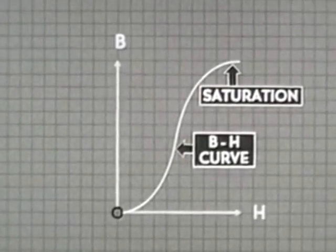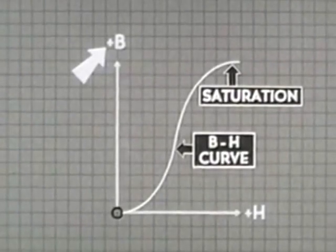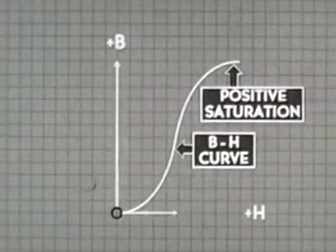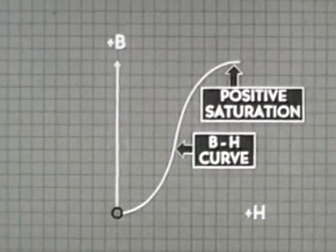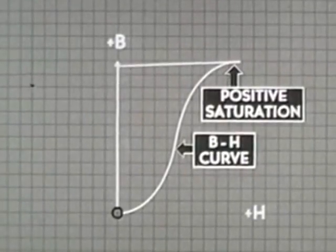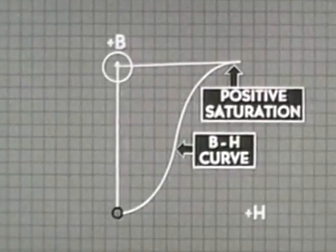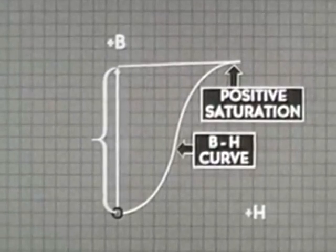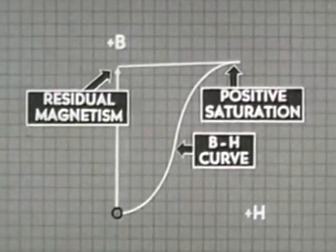This is the point of saturation — the core is holding just about all the magnetism it can hold. We've been applying a positive magnetizing force, which produced a positive flux density and brought the core to a state of positive saturation. If we now reduce or stop the magnetizing force, for all practical purposes there is no change. The core material retains most of its magnetism. The B-H curve returns to the zero line on the horizontal scale, but the flux density remains nearly at saturation. This amount of remaining magnetism is known as the residual magnetism of the core material — the magnetism that remains after the force that brought it about is removed.